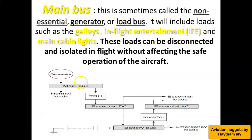So again, what is the main bus? The main bus is the lowest rank bus. It supplies loads that will not affect the safe operation of the aircraft. The main bus is also called the non-essential bus, generator bus, or load bus. It supplies loads such as galleys, in-flight entertainment, and the main cabin lights.